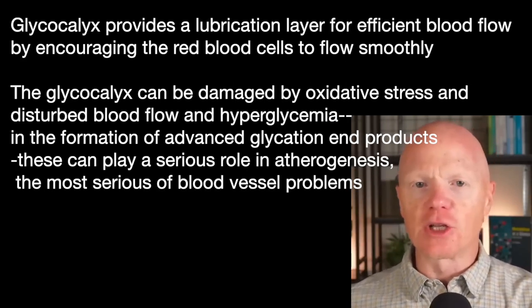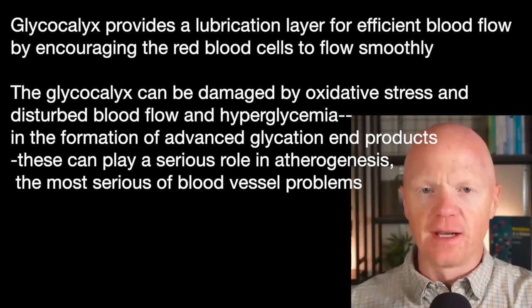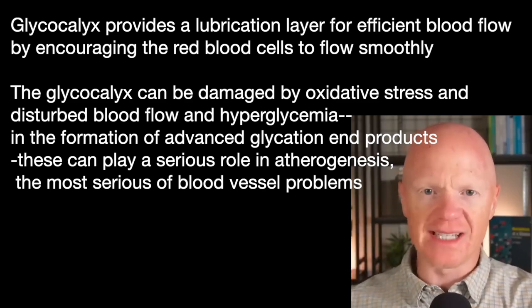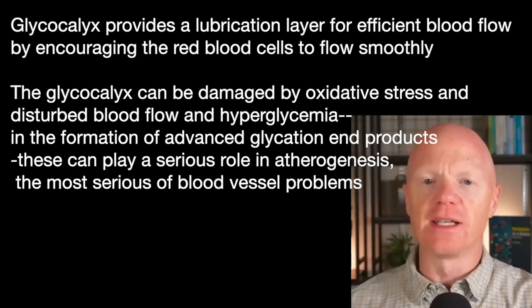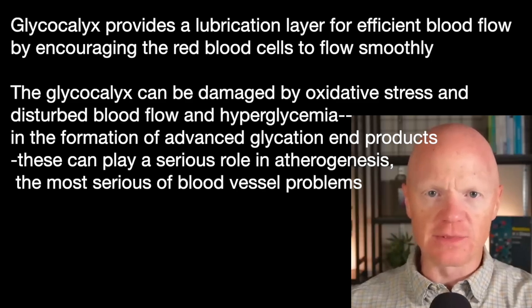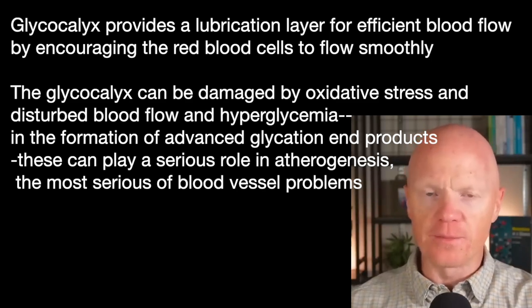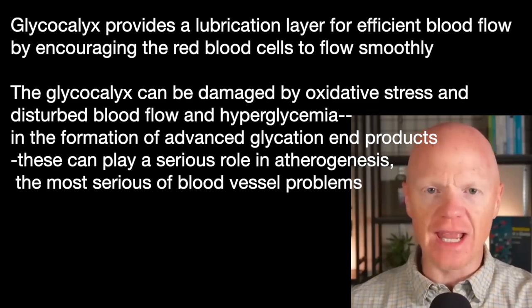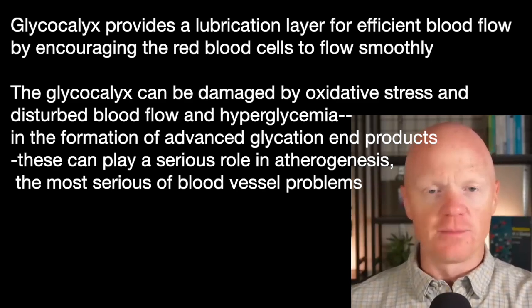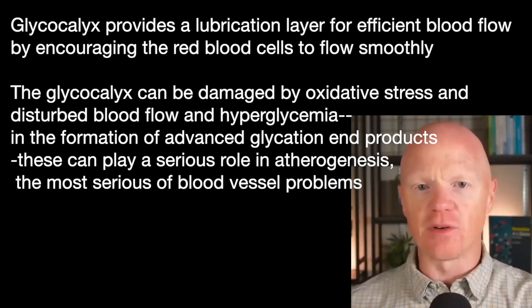The glycocalyx also creates a lubrication layer for efficient blood flow by repelling erythrocytes, helping ensure that red blood cells stay in the blood and move well without aggregating or clumping together. If the glycocalyx starts to experience degradation — which can be triggered by oxidative stress, disturbed blood flow, metabolic factors like hyperglycemia, and the formation of advanced glycation end products, or AGEs — this not only compromises the glycocalyx but also plays a role in atherogenesis.